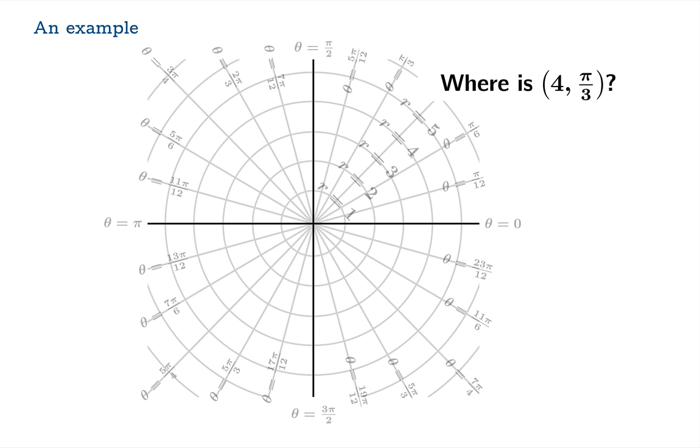Let's look at an example. Where is (4, π/3)? So the radial distance from the origin is 4, and our direction is going to be π/3 measured from the positive x-axis. That means this is the point we're describing.